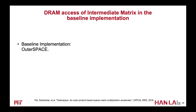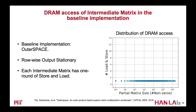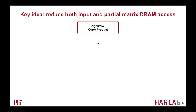The previous state-of-the-art accelerator, called Outer Space, optimizes the partial matrix DRAM accesses with a row-wise altered output stationary dataflow. They first compute partial matrices and store them to DRAM, then fetch the same row from all partial matrices and merge them before going to the next row. Therefore, each partial matrix only needs to be stored and loaded exactly once from DRAM. Although this is an improvement, it is still a heavy burden and makes the system bounded by memory bandwidth.